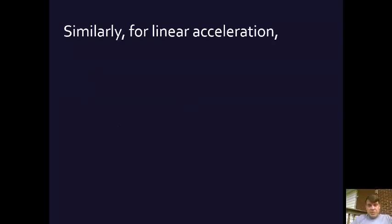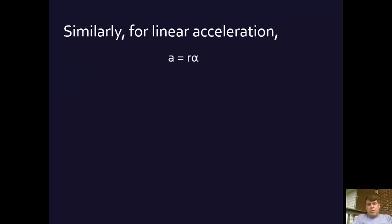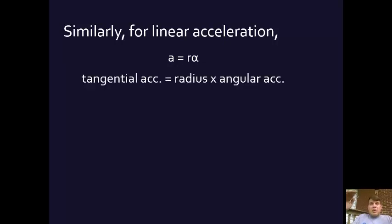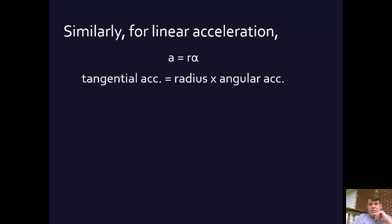The same thing goes for linear acceleration. The tangential linear acceleration is going to equal the radius times the angular acceleration, where that alpha — the Greek letter α — is the angular acceleration. So the tangential acceleration, how fast the rock is accelerating as it goes around the circle, equals the radius times the angular acceleration.